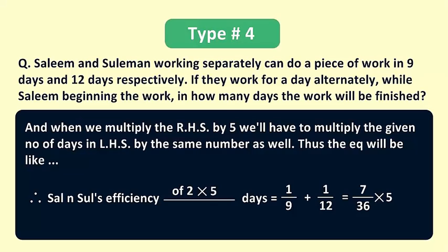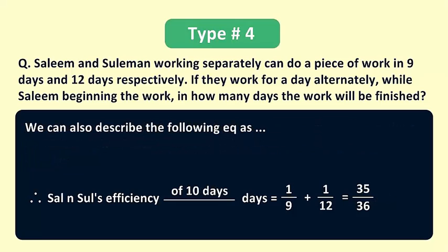Thus the equation would be like Salim and Suleiman's combined efficiency of 2 × 5 days is equal to 7/36 × 5, or we can also describe the following equation as Salim and Suleiman's combined efficiency of 10 days is equal to 35/36.